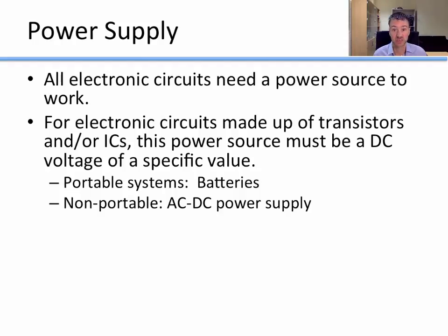All electronic circuits need a power source to work. For electronic circuits made up of transistors or integrated circuits, the power source needs to be a DC or direct current voltage of a specific value. Commonly we're using either 5 volts or 3.3 volts for our digital circuits.